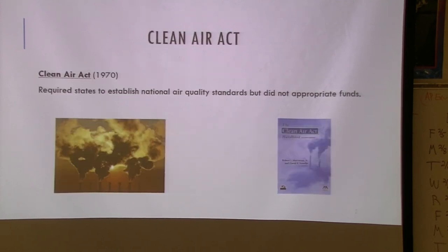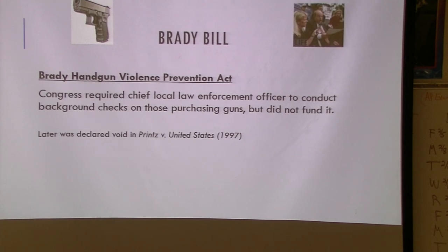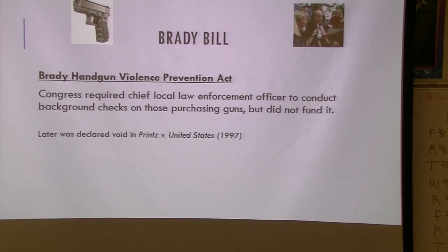The Clean Air Act is another example — states had certain requirements with no federal money given to businesses or states to help meet those regulations. The Brady Bill — a lot of it was later declared unconstitutional for various reasons — was about background checks for gun purchases. In the 1990s, we said we need more background checks. Named after James Brady, who was paralyzed with brain damage from the assassination attempt on Ronald Reagan. States and local governments had to conduct background checks but there was no funding provided.